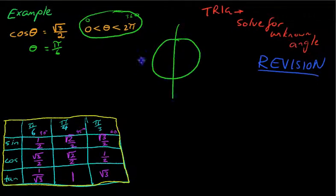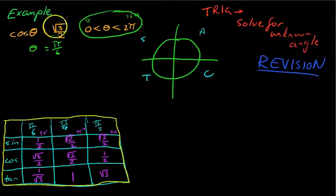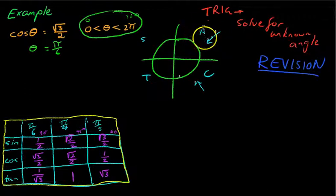So here's my unit circle. Now remember your C, A, S, T. Now you can see that cos θ equals positive root 3 on 2. So if it's a positive cos value we're dealing with, that means that it must exist in either this quadrant or this quadrant, the cos quadrant, the fourth quadrant or the all quadrant, the one which makes them all positive.